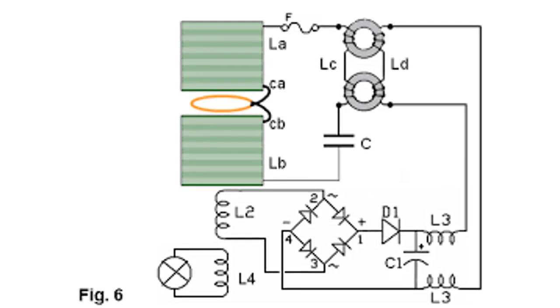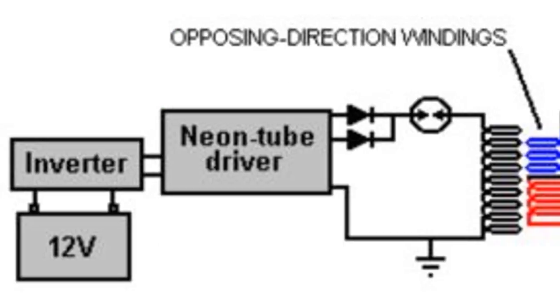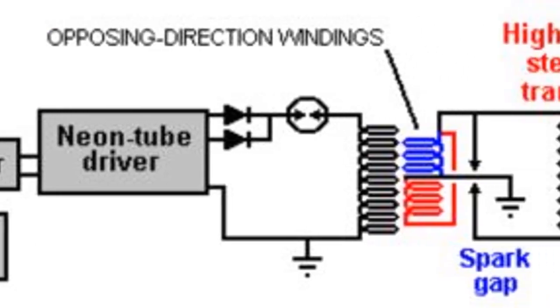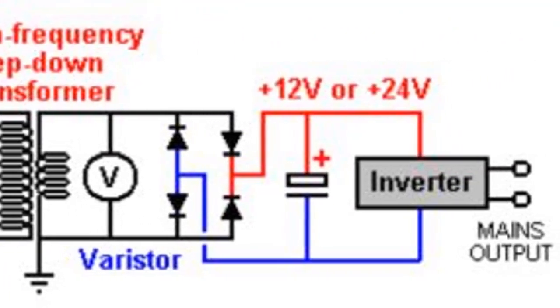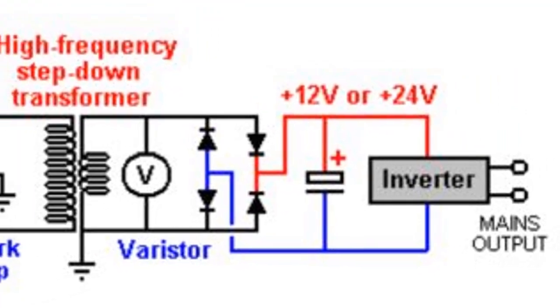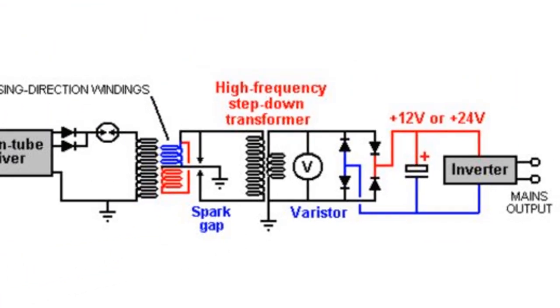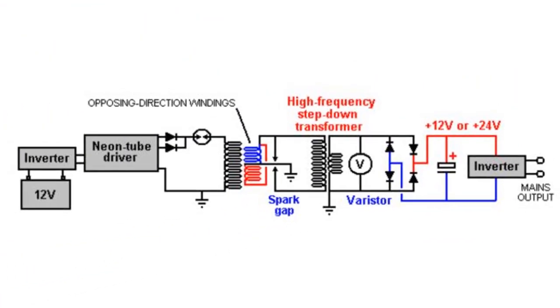Nikola Tesla invented the Tesla coil. This device is able to create high-frequency alternating currents that can be used to generate radiant energy. A recent study has shown that when operated at high frequencies, the Tesla coil's ether field collapses, leading to an increase in radiant energy output.